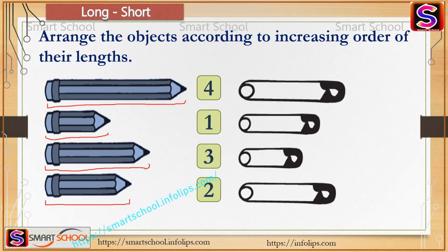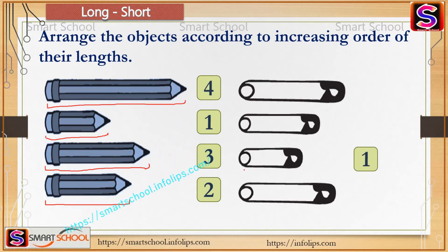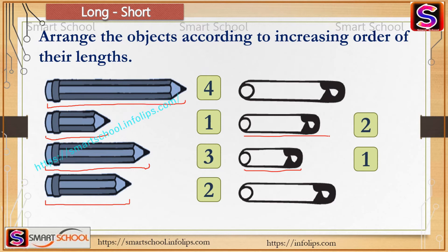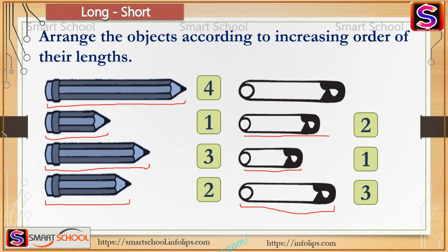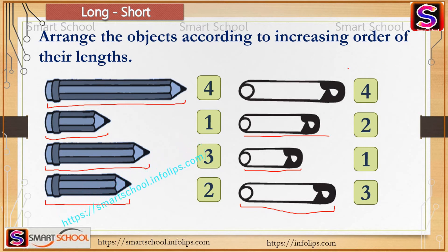Now there are safety pins — tell me the order. The first one comes first because it has very little length. Second is next, and third has a little more length than the second. The last one comes fourth because that safety pin has the longest length.